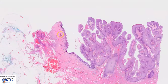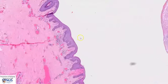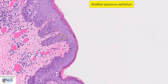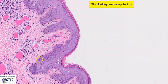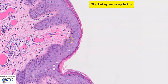Let's have a very quick look at the uninvolved epidermis. We can see that this is stratified squamous epithelium, where the cells at the base have higher NC ratios. Then there is maturation towards the surface, where the cells have lower NC ratios or more cytoplasm, and then a surface layer of keratinization.